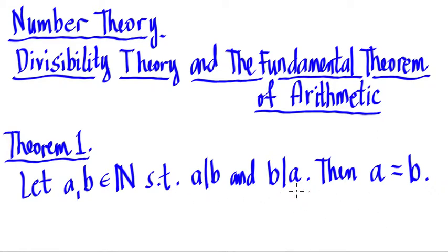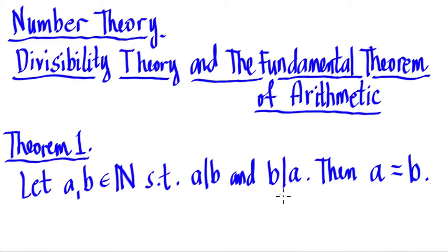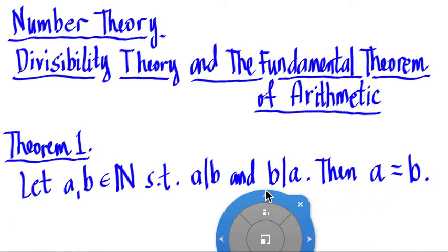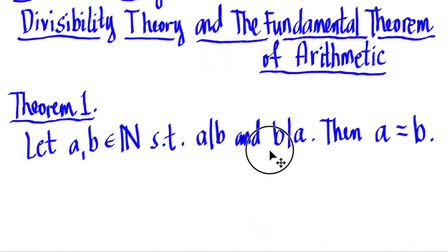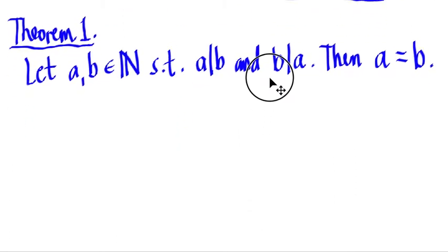In my module, I said that the proof here is trivial because it can be seen that if a is a factor of b and b is a factor of a, then they are equal. But if you want the proof of it, let's give a proof of this here.